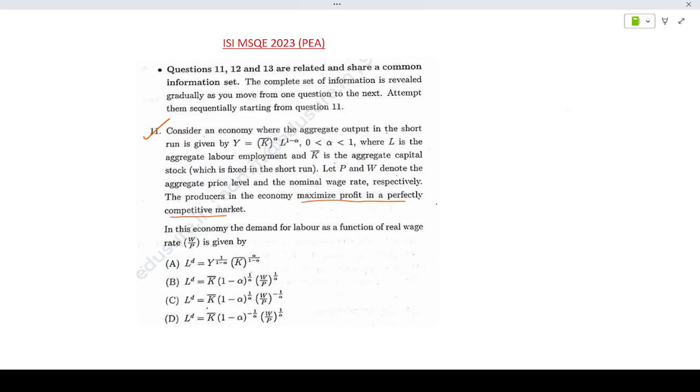The profit expression would be π equals P into y minus the cost. So that would be k bar to the power alpha, l to the power 1 minus alpha, minus the cost would be paying of nominal wage of W to labor and R to capital.